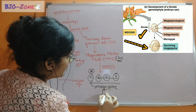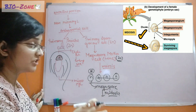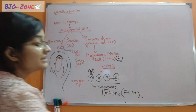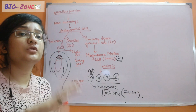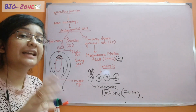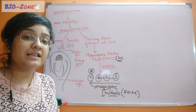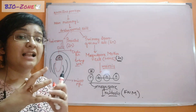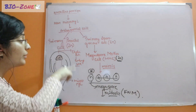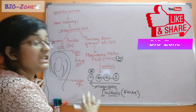This functional megaspore now performs mitosis. It will go through three successive stages of free nuclear mitosis. In free nuclear mitosis, only karyokinesis happens — the nucleus divides — but not cytokinesis. So within the embryo sac we are getting only the nuclei, without cell wall formation between them.